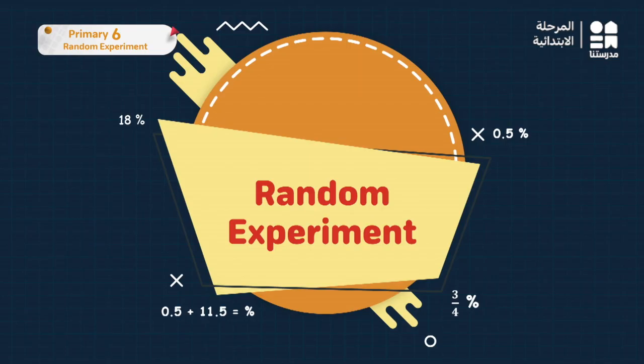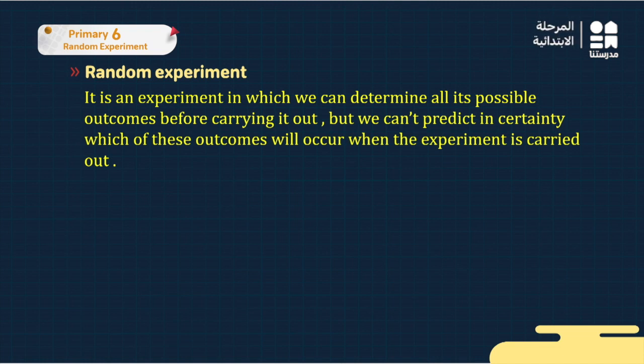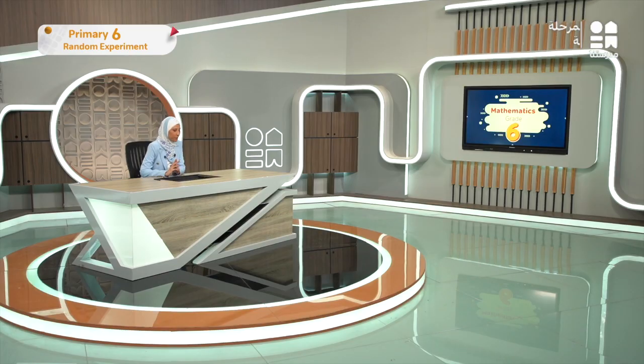First, let's understand the meaning of random experiment. 'Random' means something unprepared — something I'm not sure about. The definition of a random experiment is: an experiment in which we can determine all its possible outcomes before carrying it out, but we cannot predict with certainty which of these outcomes will occur when the experiment is carried out.